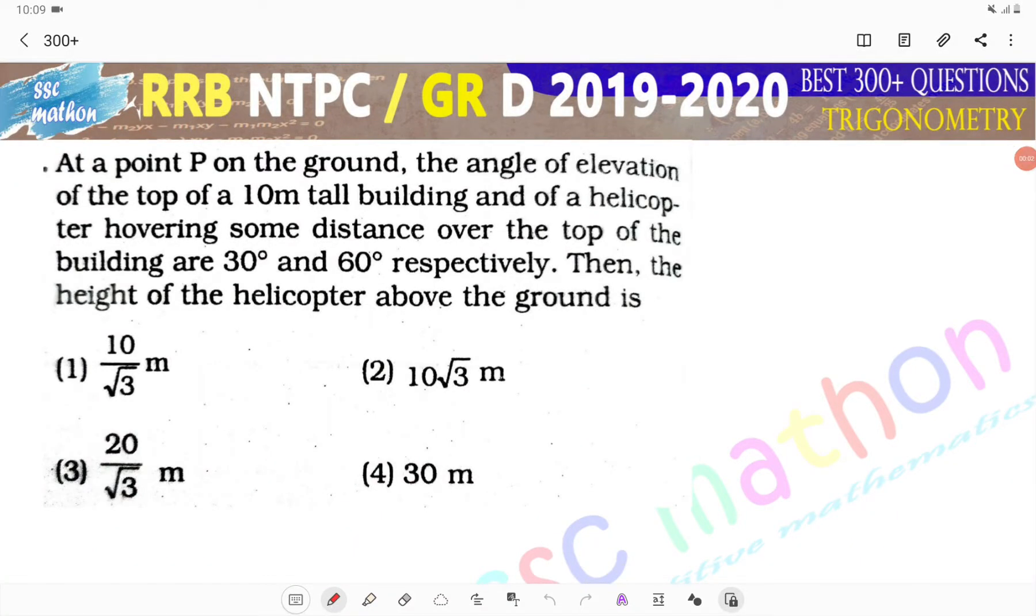Hello everyone, welcome back to this channel. I'm going to ask you a question. At a point P on the ground, the angle of elevation of the top of a 10 meter tall building and of a helicopter hovering some distance over the top of the building are 30 degrees and 60 degrees respectively. Then the height of the helicopter above the ground is...